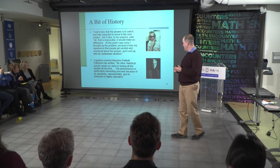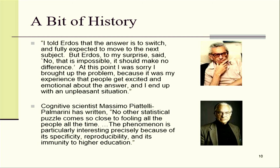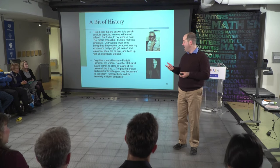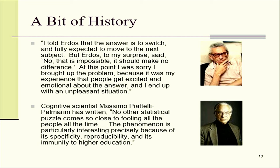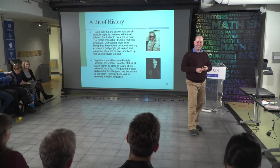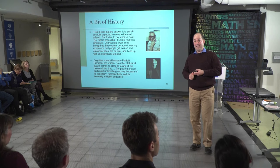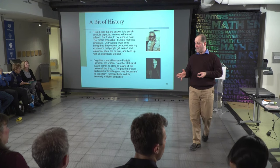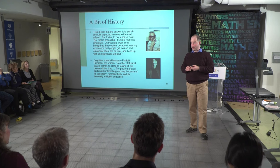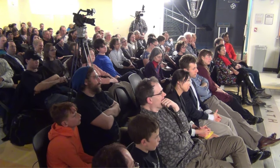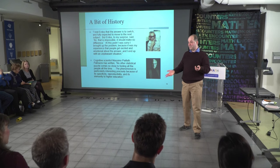Massimo Piatelli-Palmarini, a fairly prominent cognitive scientist, wrote a book called Cognitive Illusions. Just as optical illusions fool the eye, he coined the term 'cognitive illusion' for something that fools the brain. He has a great line about the Monty Hall problem: 'the phenomenon is particularly interesting precisely because of its specificity, reproducibility, and its immunity to higher education.' The problem was first called the Monty Hall problem in 1975 in the American Statistician, when Steve Sullivan wrote a letter to the editor sharing it as an interesting probability exercise for students — and was promptly deluged with letters saying it was obviously 50-50.